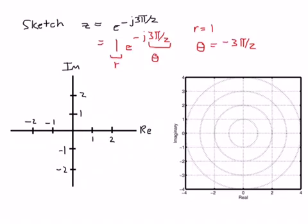I'm going to sketch the vector corresponding to this complex number. So the radius we know is 1 so the vector will have a length of 1 and the angle is minus 3 pi over 2. Now we always measure the angle from the real axis. If it's a positive angle we go around counterclockwise. If it's a negative angle we go around clockwise.